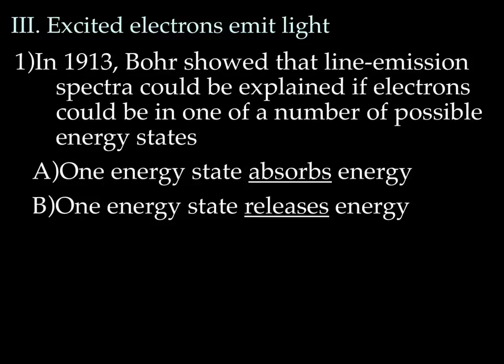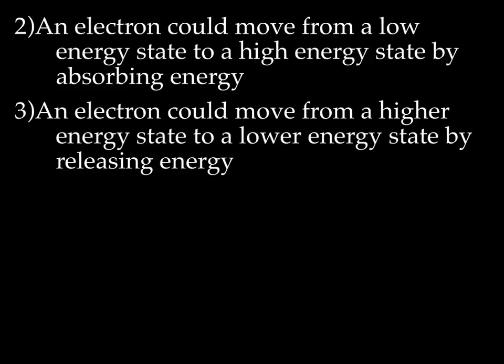Excited electrons emit light. In 1913, Bohr showed that the line emission spectrum could be explained if electrons could be in one of a number of possible energy states. One state, the electron's going to be absorbing energy, and in one state, an electron is going to be releasing energy. So an electron could move from a low energy state to a high energy state by absorbing energy. In Bohr's experiment, the way he did that is, for example, let's take the hydrogen gas again. He took hydrogen atoms in a gas form, put it inside that glass tube, and then hooked it up to a battery. That battery gave energy to the electrons,